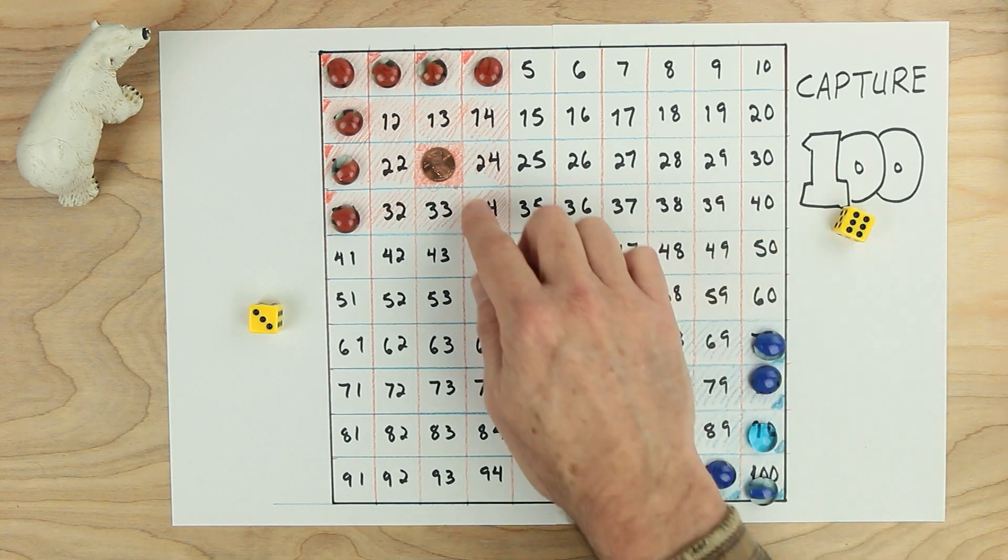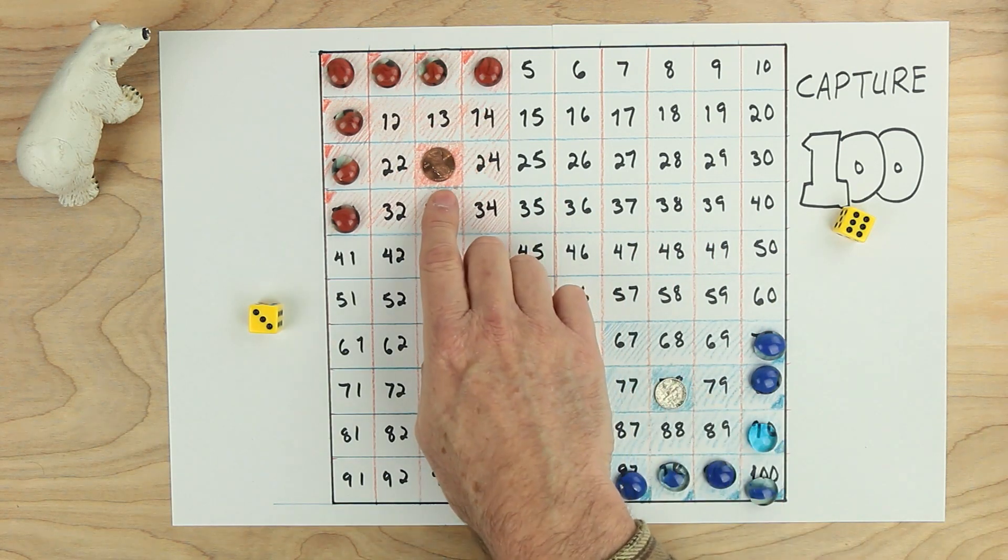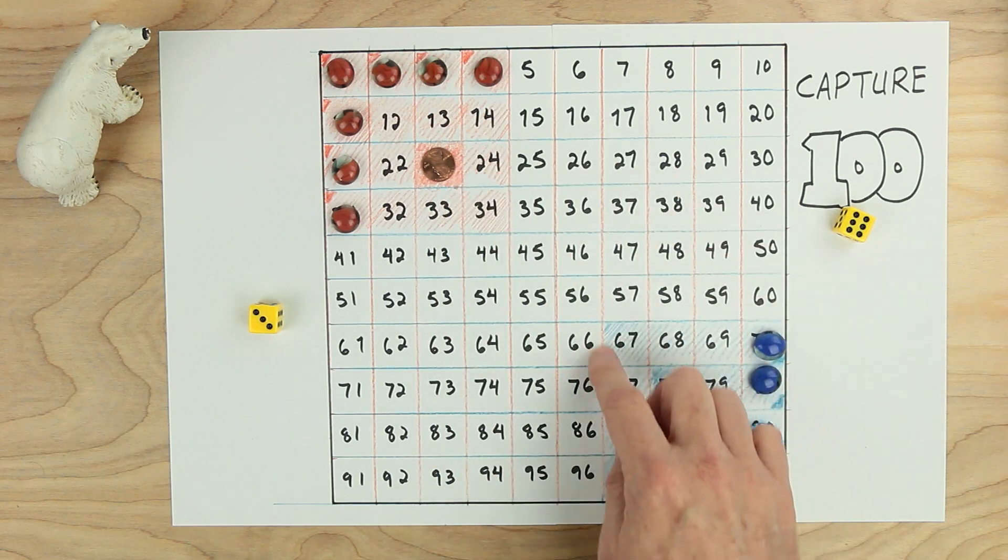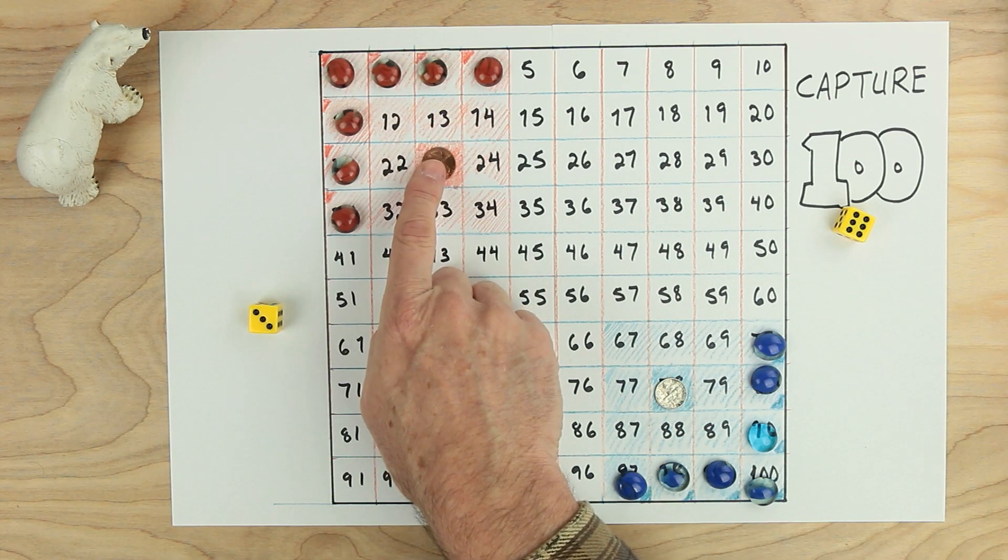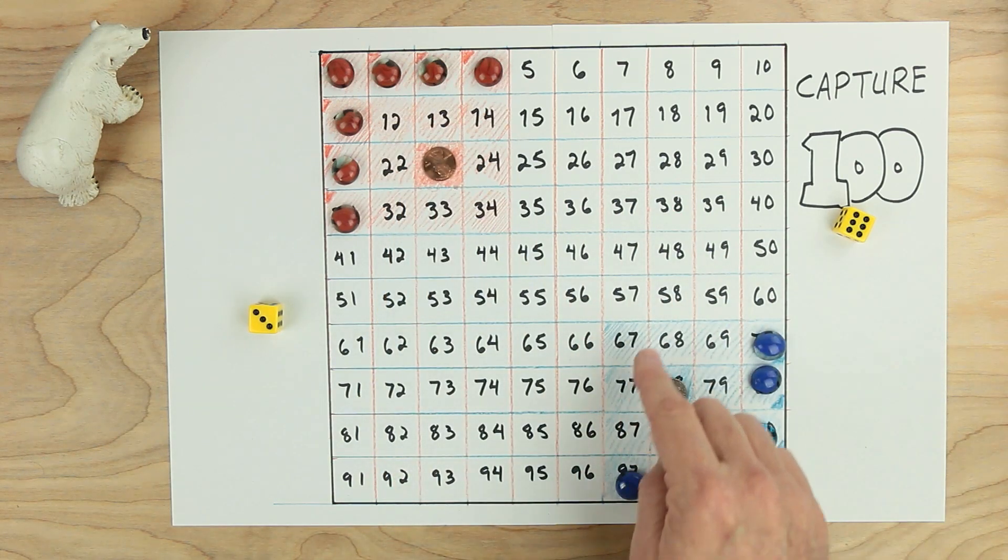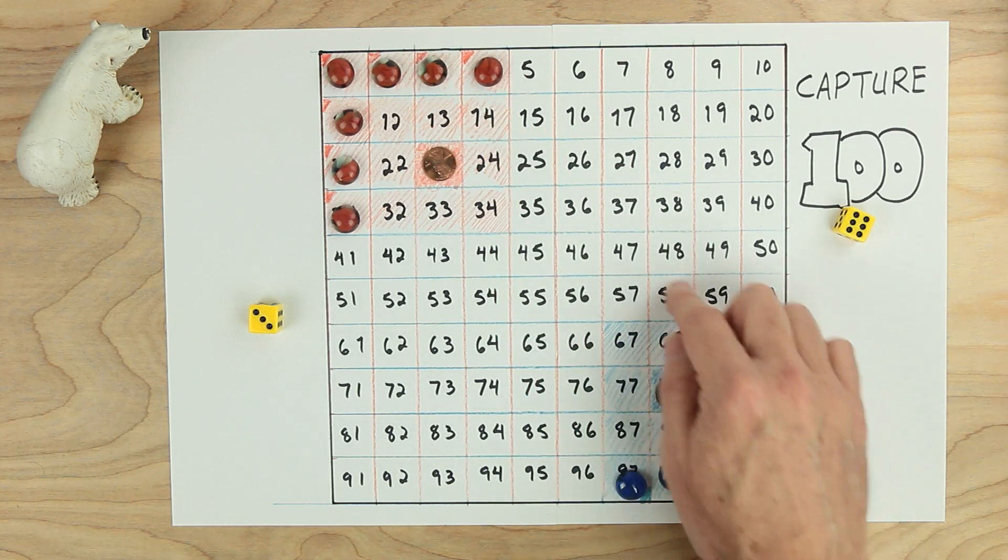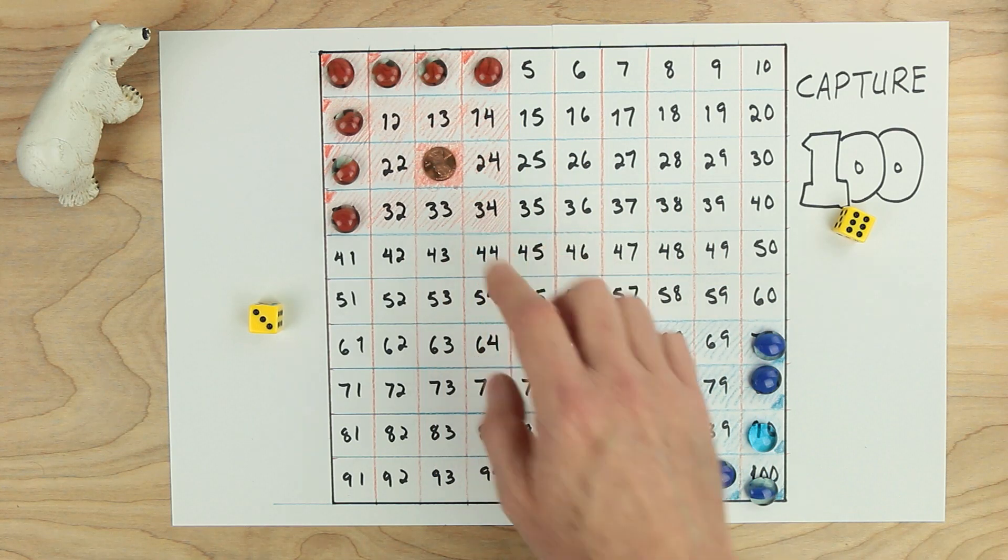The pieces are moving along the board to try to capture the other side's treasure. Once that treasure is captured, that piece will move with that treasure, trying to get it back into the player's zone. So as soon as blue takes this penny into any part of the blue, then blue has won. If red takes this dime into any part of this red up here, then red has won. Let's play.